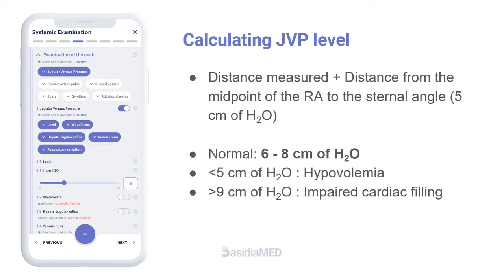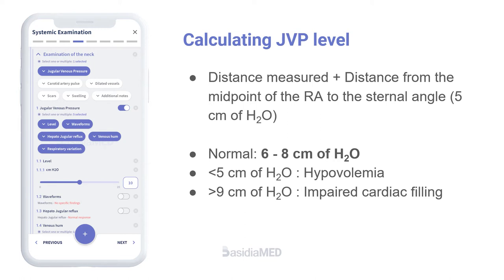Calculation and Interpretation of JVP Levels: The height of JVP is calculated by adding the distance measured plus the constant distance from the midpoint of the right atrium to the sternal angle, which is 5 cm of water. Normal JVP is generally 6 to 8 cm of water. A mean venous pressure of less than 5 cm of water reflects hypovolemia, and greater than 9 cm of water reflects impaired cardiac filling and volume overload.